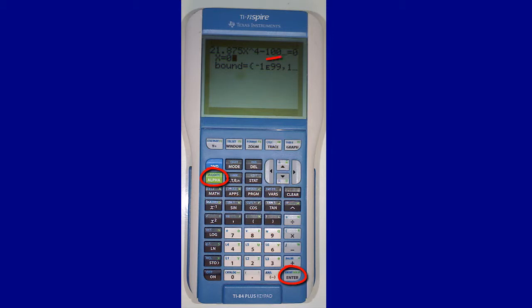In order to get an answer from solver, the cursor must be next to the guess value, and you must press ALPHA ENTER, or solve, in green. The calculator returns its best guess for what value will make the equation equal to zero.